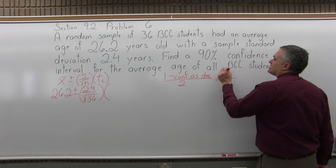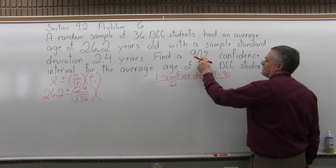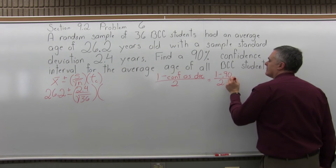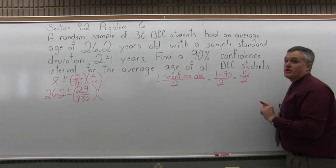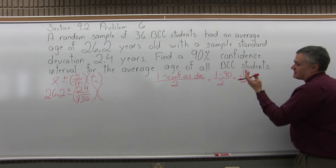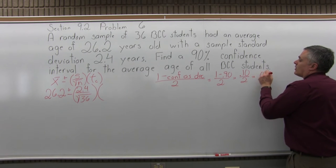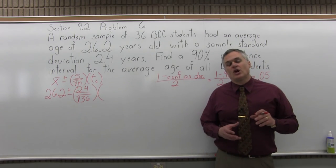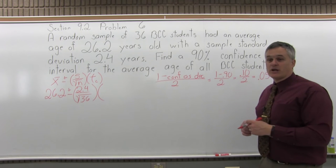The correct column is determined by doing 1 minus the confidence level as a decimal divided by 2. So 1 minus the confidence level as a decimal is 1 minus .90. You can write .9 if you want, you don't need the 0 in the end. You still have to divide it by 2. 1 minus .90 is .10, still divided by 2. And .10 divided by 2 is .05. So .05 is the column heading that you want to look for.